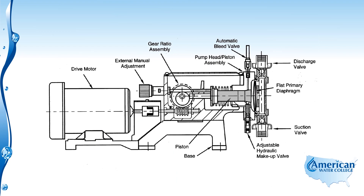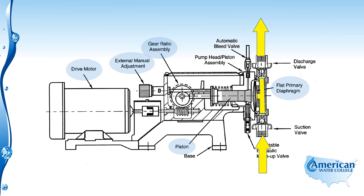One type of chemical feed pump is the diaphragm pump. It has a drive motor, external adjustments and gearing to adjust the stroke length, and a diaphragm that varies the volume within the chamber. As the piston moves back and forth, it moves the diaphragm, and the ball check valves open and close sequentially so that it constantly draws in chemical and discharges chemical with every stroke. This is a positive displacement diaphragm-type metering pump.